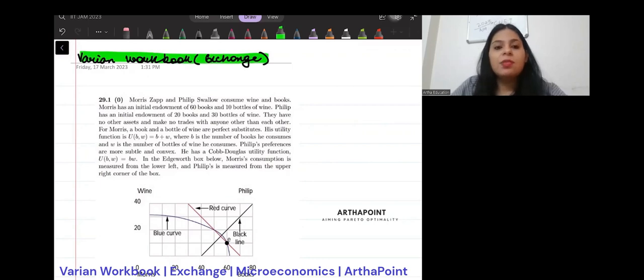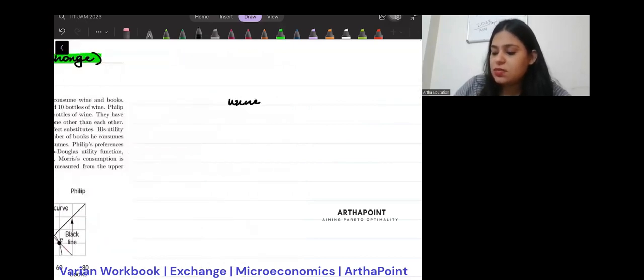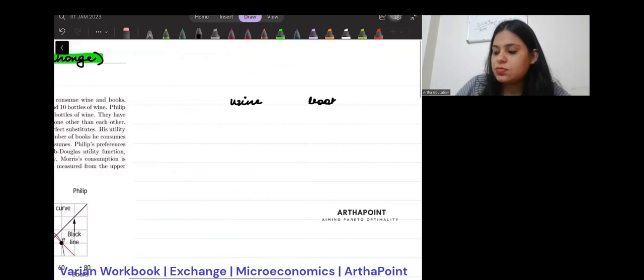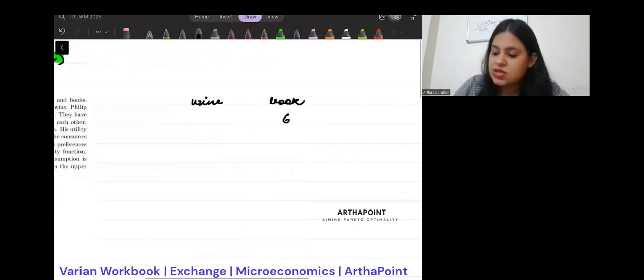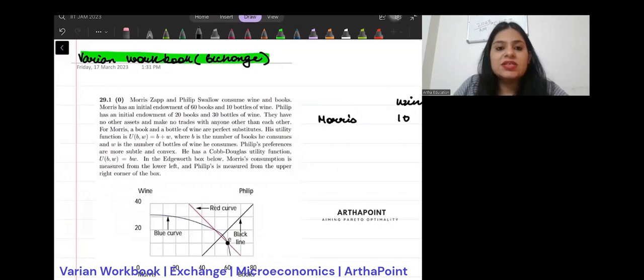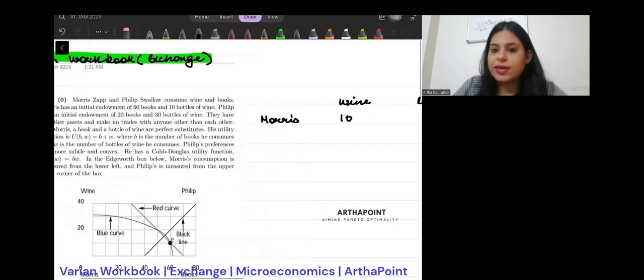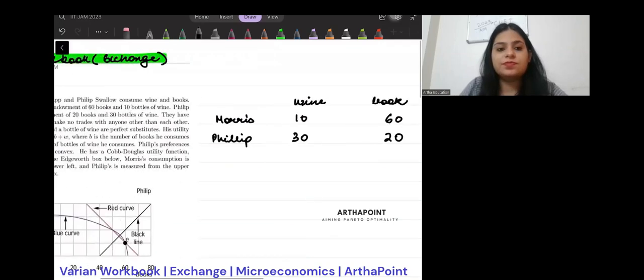Let us try to see the question. Morris, Zap and Philip Swaggo consume wine and books. So we have two things: wine and book. Morris has initial endowment of 60 books and 10 bottles of wine. Philip has initial endowment of 20 books and 30 bottles of wine.